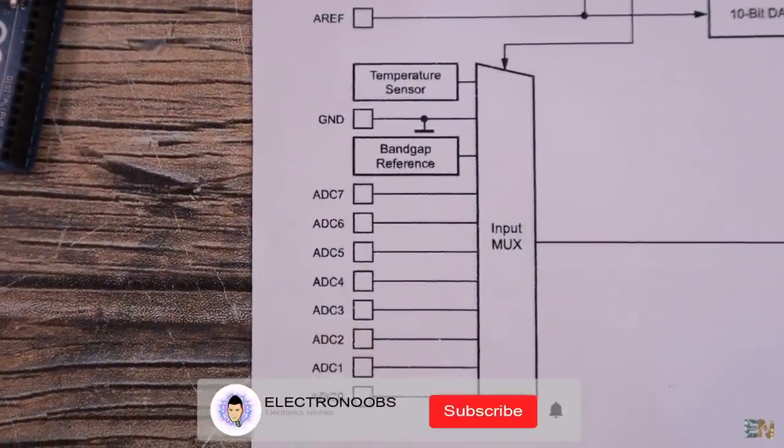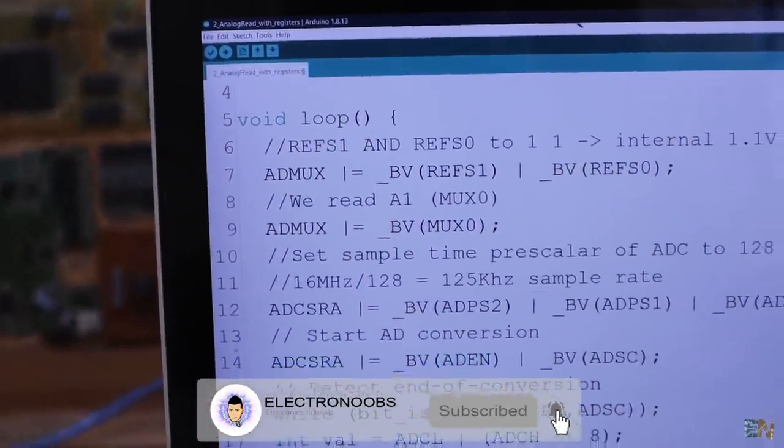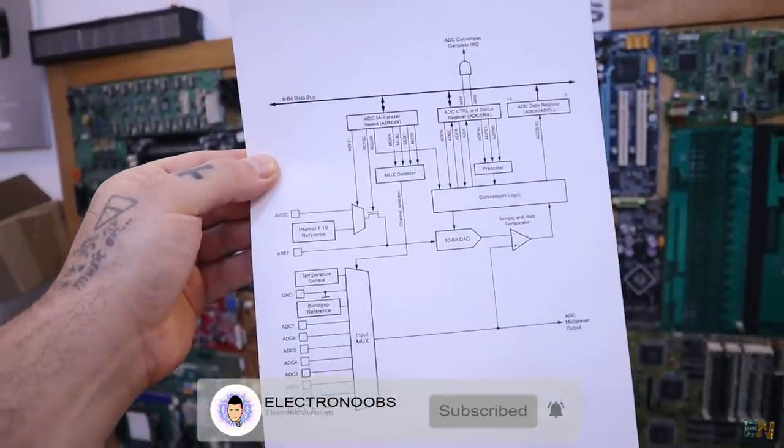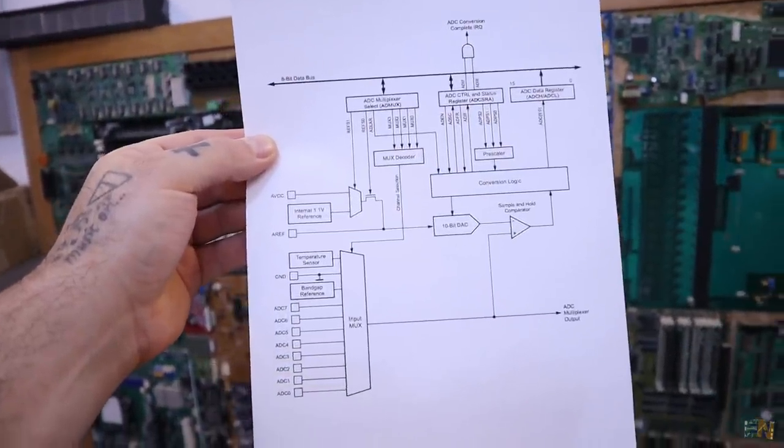So basically, we will learn what the analog read function does. When this video is over, you should know what each of these blocks will do. So guys, let's get started.